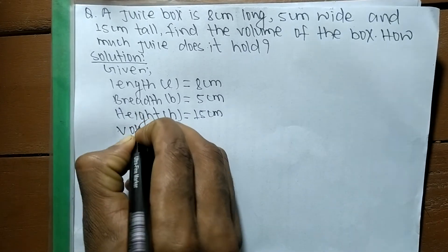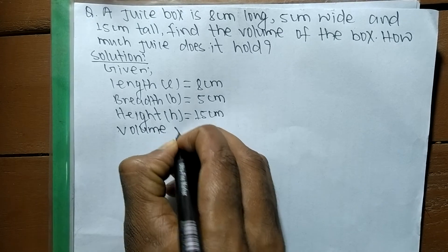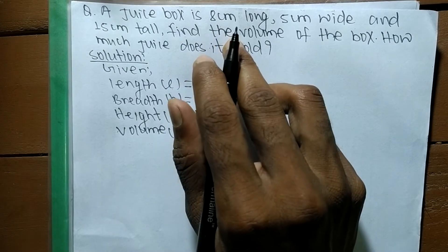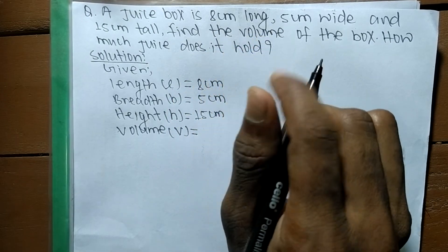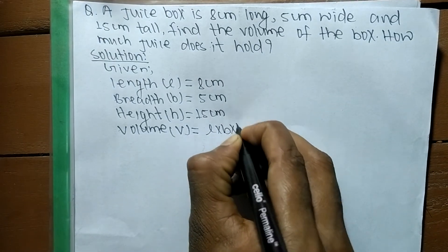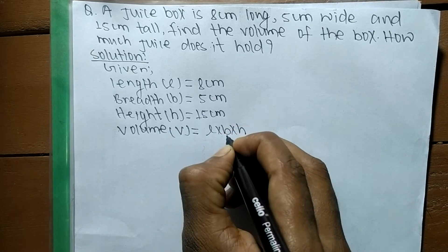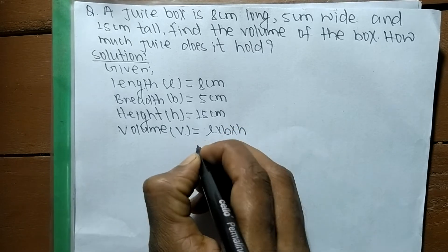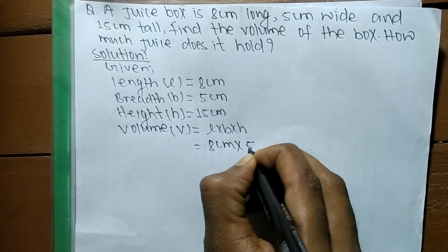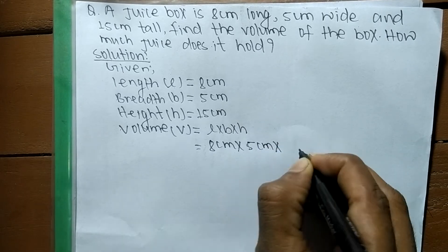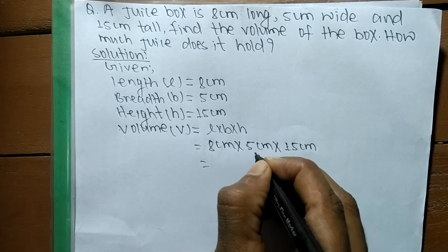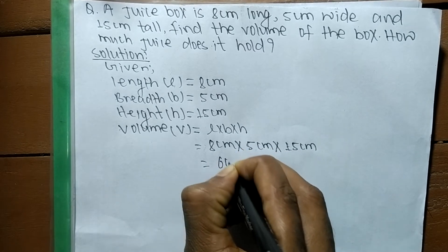Now we have to find out its volume. We denote volume by V. It is a cuboid-shaped object, so when there is a cuboid-shaped object, volume becomes L times B times H, where L stands for length, B for breadth, and H for height. Here length is 8 centimeters, breadth is 5 centimeters, and height is 15 centimeters. So 8 times 5 is 40, and 40 times 15 gives us 600.